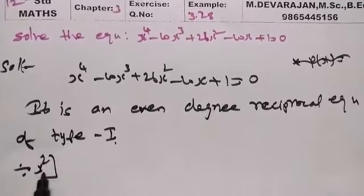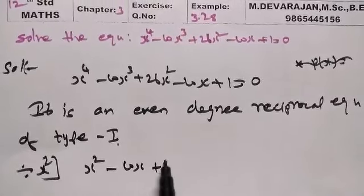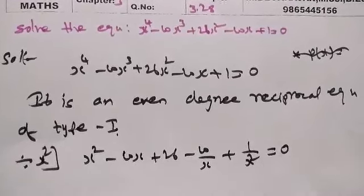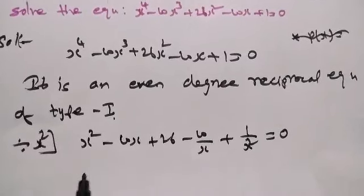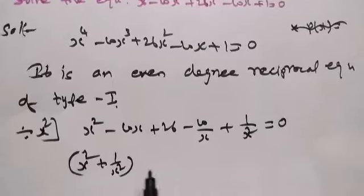Divide by x square on both sides. x power 4 by x square minus 10 x plus 26 minus 10 by x plus 1 by x square equal to 0.